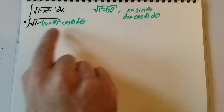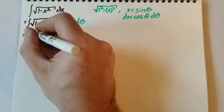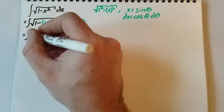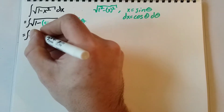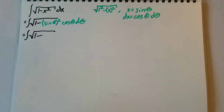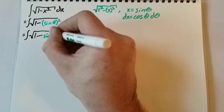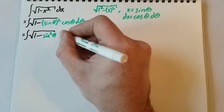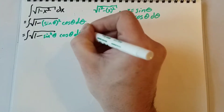Let's clean this up a little bit. We have the integral of the square root of 1 minus sine squared theta, times cosine theta d theta.